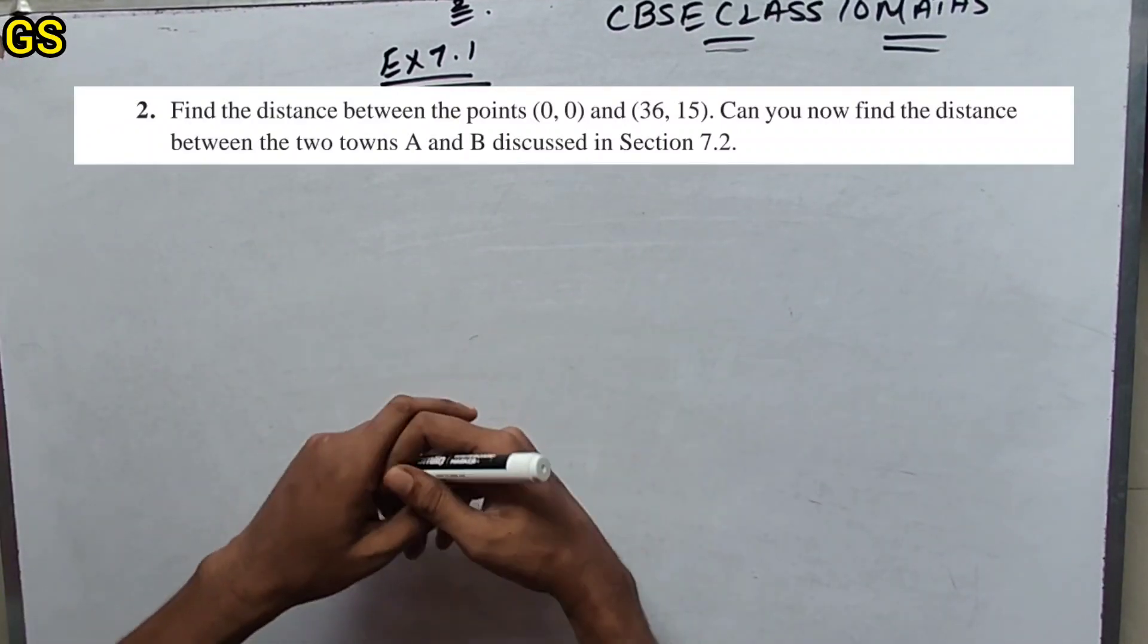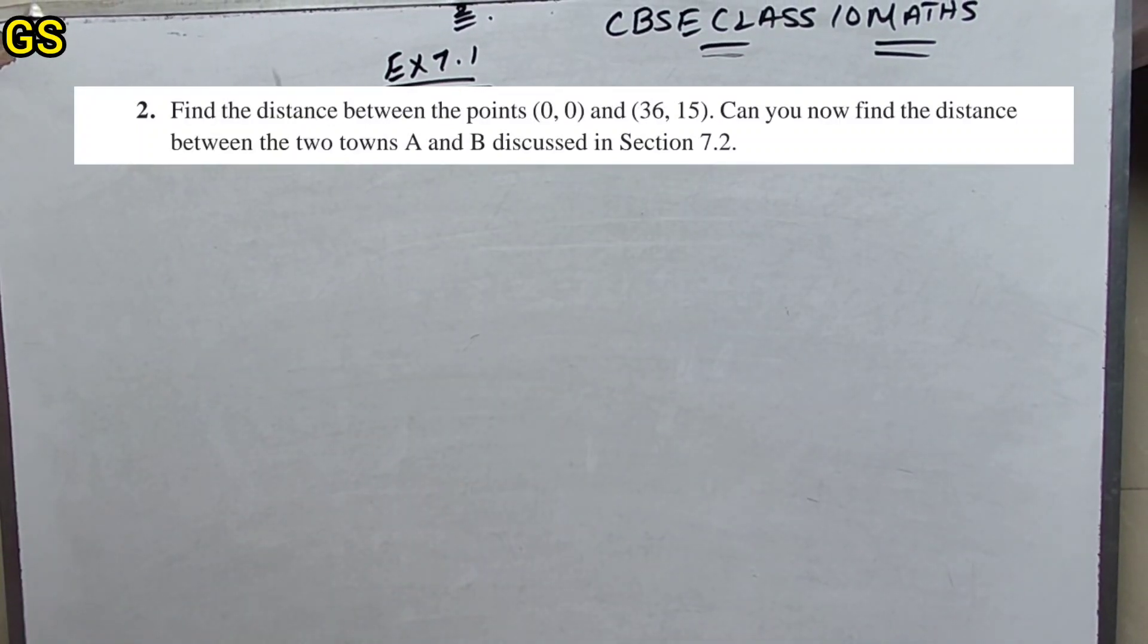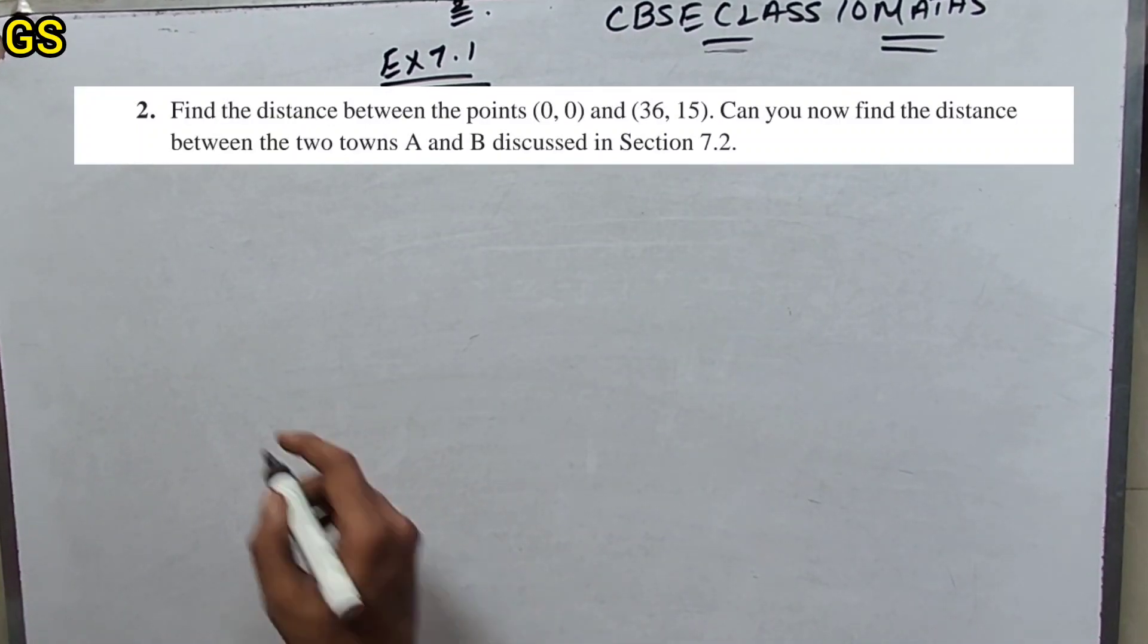Now the second problem solution. We will display the question: Find the distance between the two points (0,0) and (36,15). So solution...